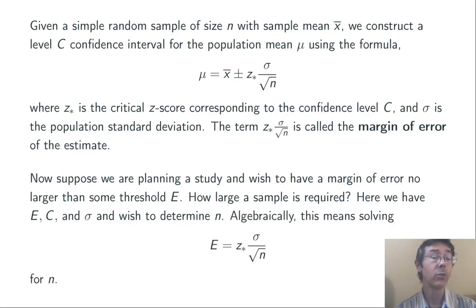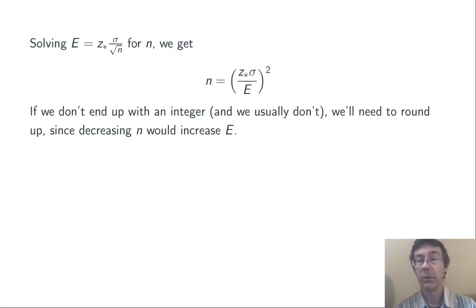Algebraically, that just means solving this equation for n. That's not too bad. We multiply both sides by the square root of n, divide both sides by E, and then square both sides to get n = (z*σ/E)².